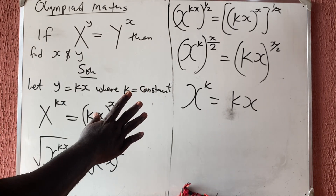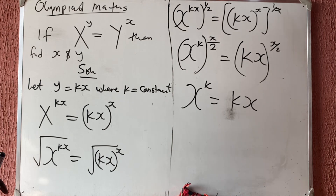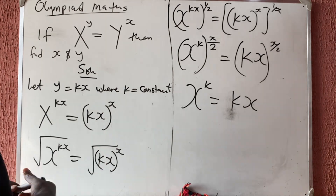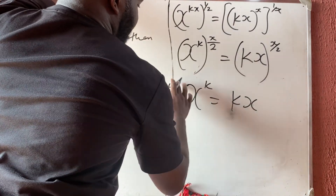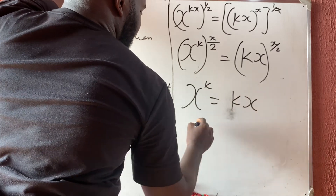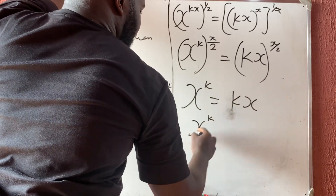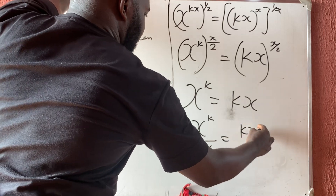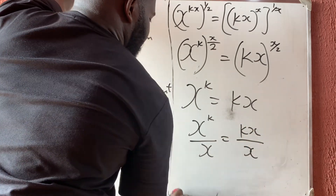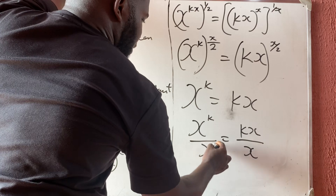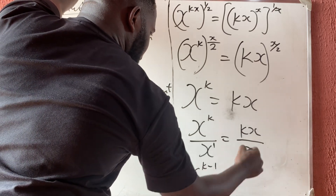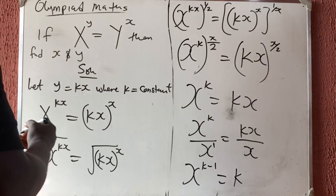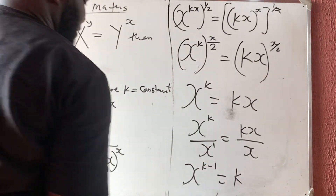Now I want k to be on a particular side, so we divide both sides by x. We get x raised to the power k divided by x equals kx divided by x. This gives x to the power k minus one is equal to k.